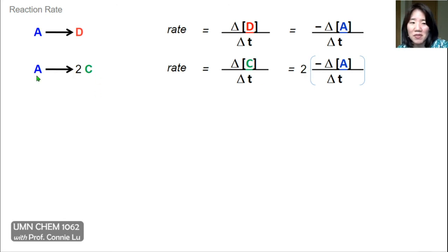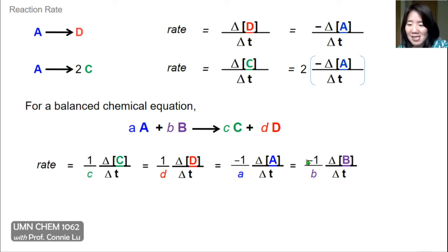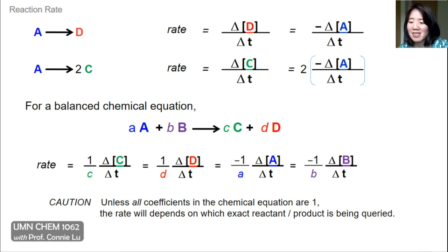This factor of two comes from the one-to-two stoichiometric relationship. A useful general relationship is: for any balanced chemical equation aA + bB → cC + dD, where a, b, c, and d represent the stoichiometry of the reaction, the rate equals the formation of the products divided by their coefficients, which equals the rate of disappearance of the reactants divided by their coefficients (with negative signs). It's important to remember that unless all coefficients in the balanced equation are one, the rate may depend on exactly which reactant or product we're asking about.